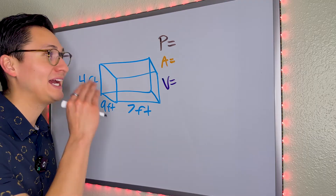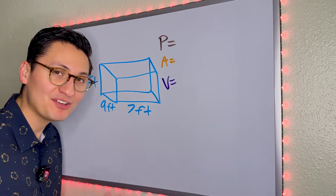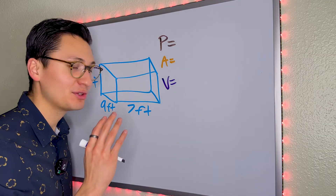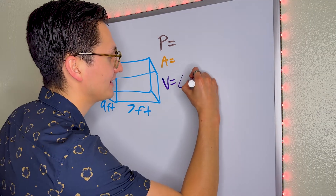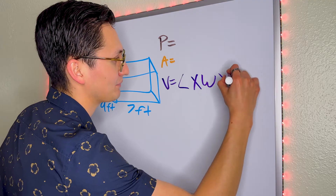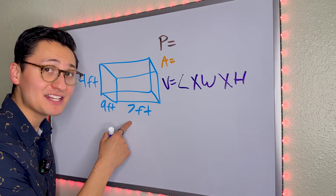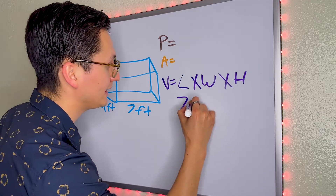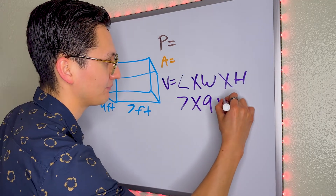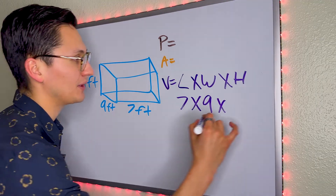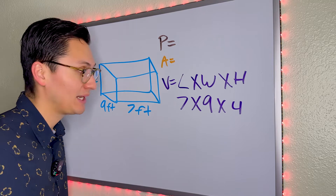For this problem, we are going to find the perimeter, the area, and the volume. But first, let's do volume. The formula for volume is length times width times height. The length is 7, the width is 9, and the height is 4. All we have to do is multiply now.